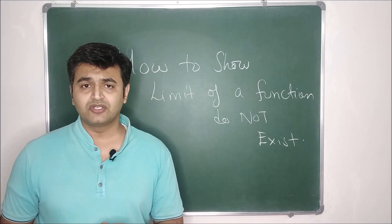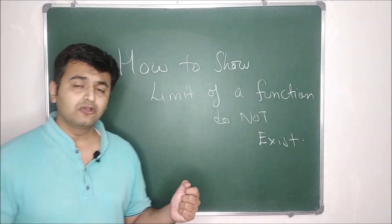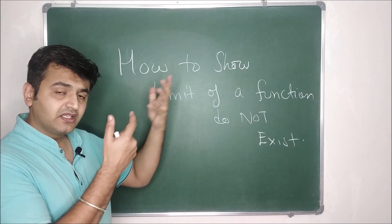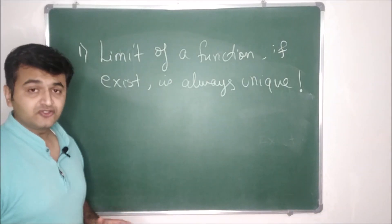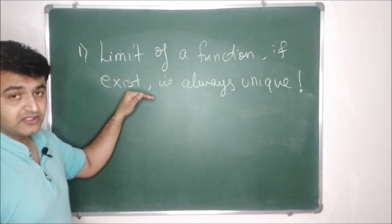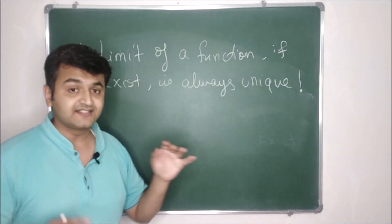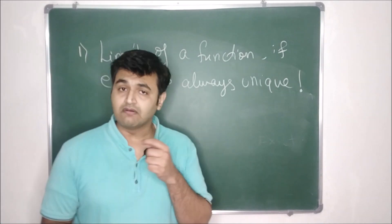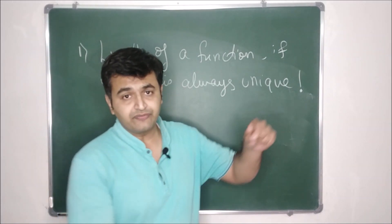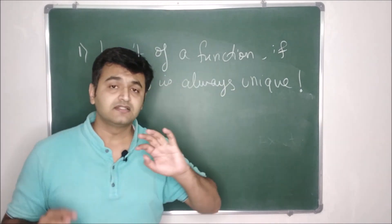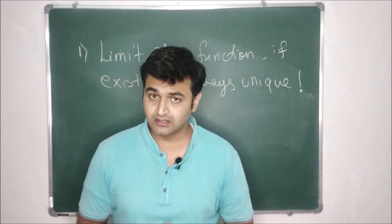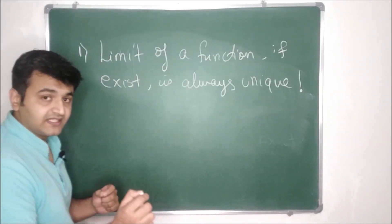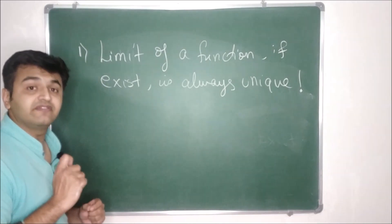Before jumping to the examples, let's see some small points one should know, and also the difference between one variable and higher variables. The first thing that should be clear is that the limit of a function, if it exists, is always unique. If you have a function approaching different numbers along different paths, we say that the limit does not exist.